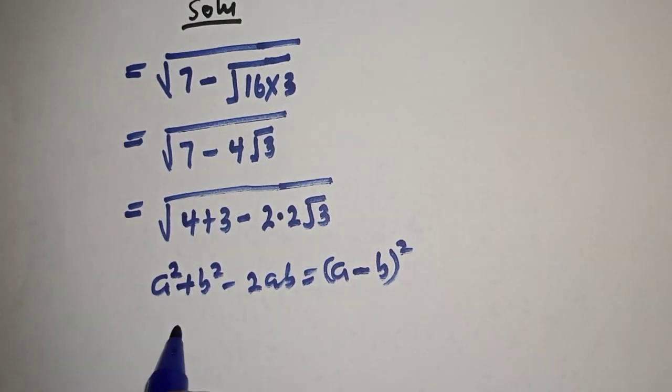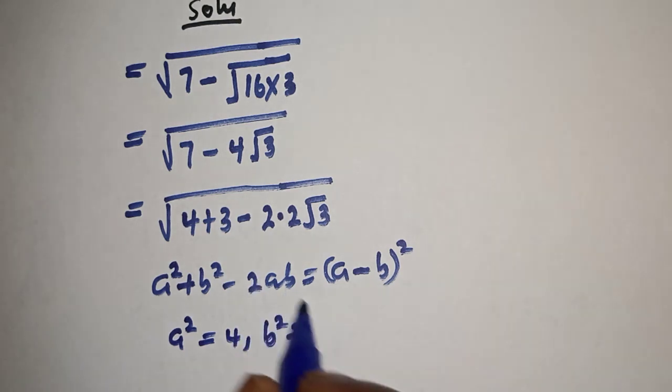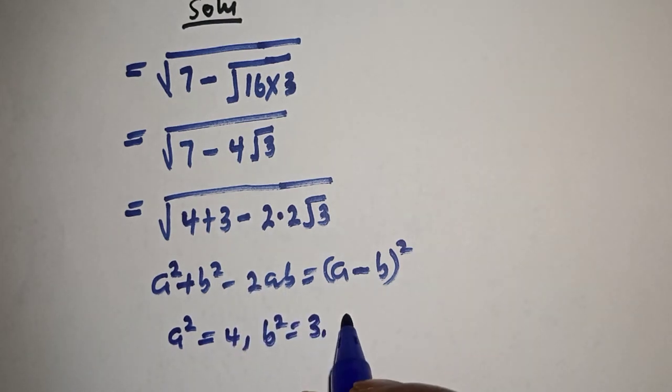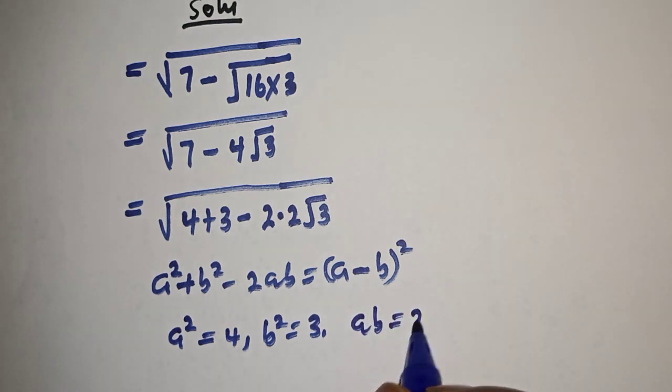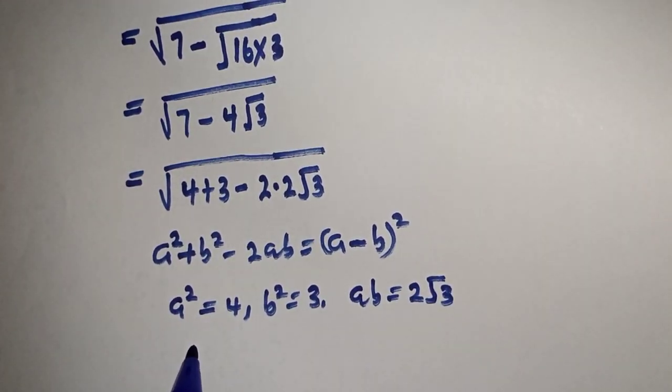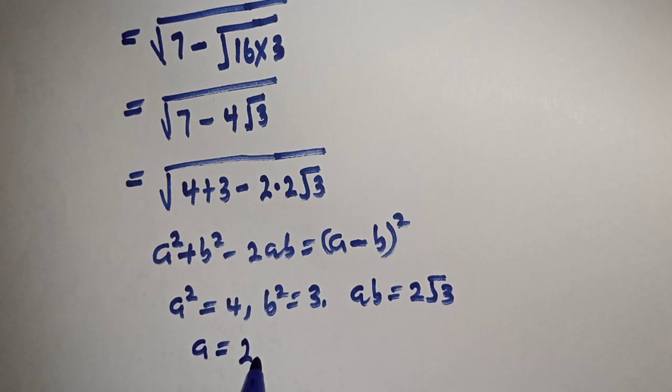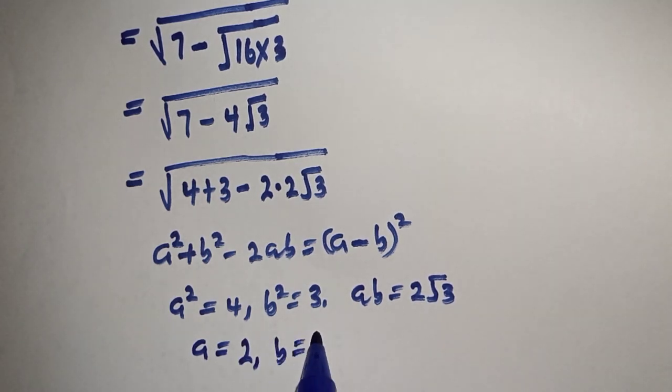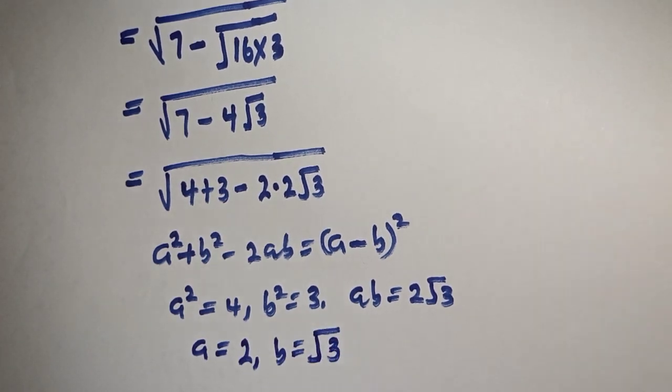So from here, a squared is equal to 4, b squared is equal to 3, then ab is equal to 2 root 3. Therefore, a is equal to 2 and b is equal to root 3.